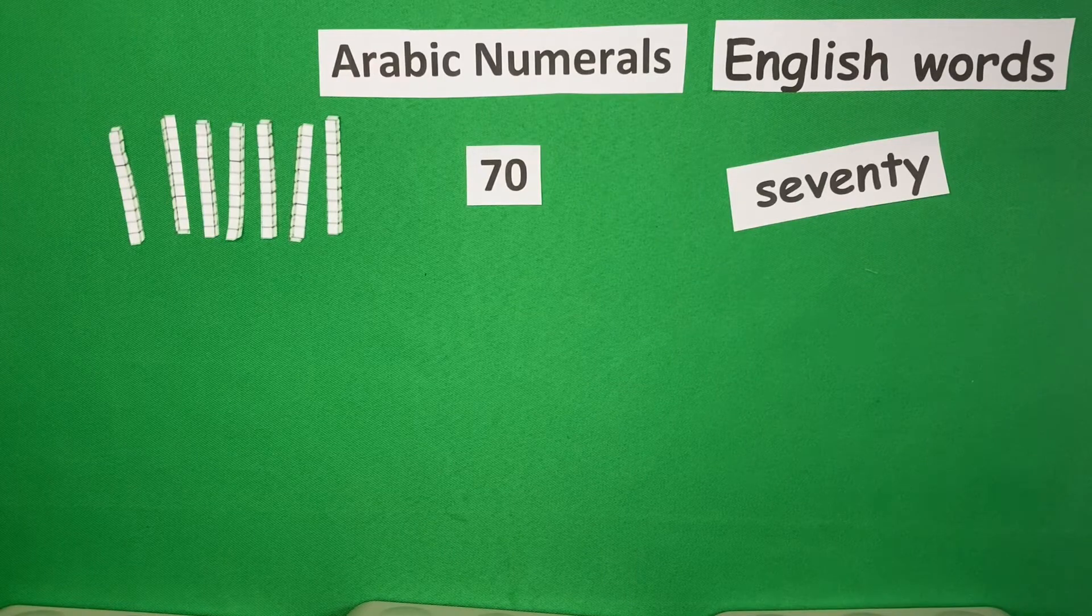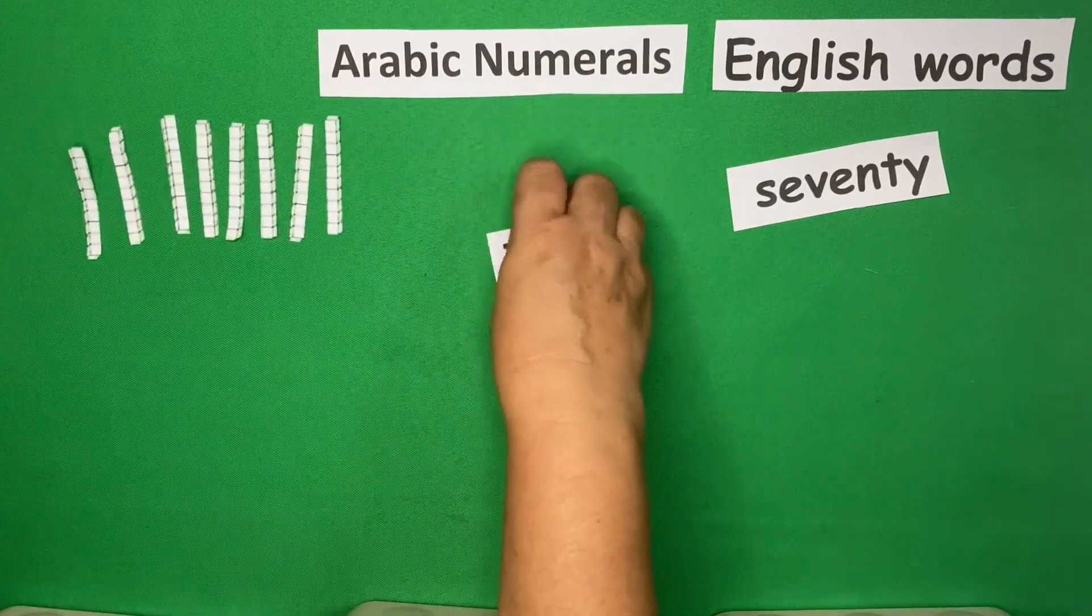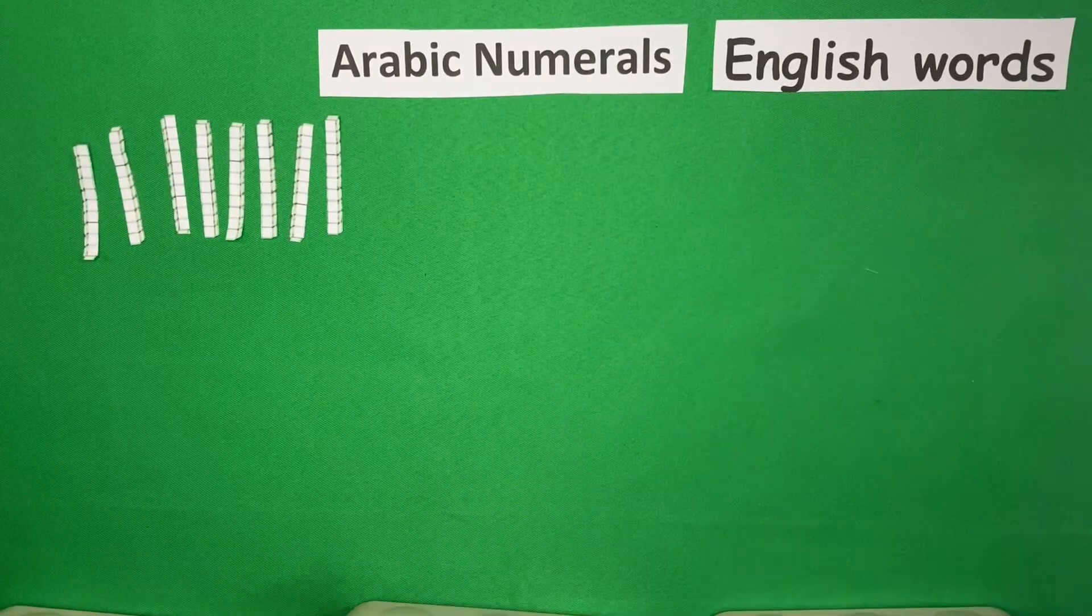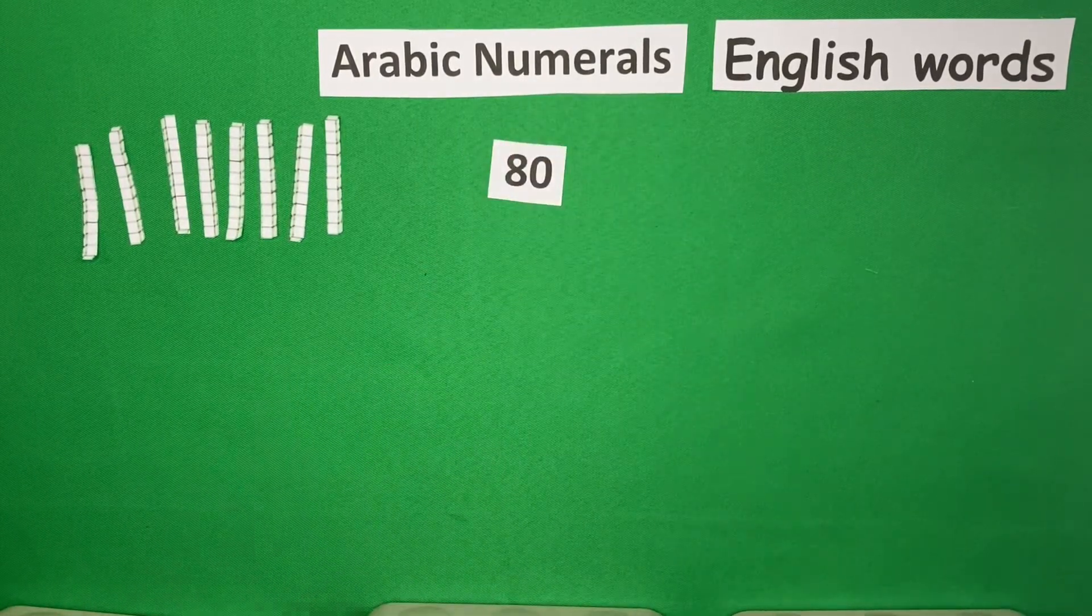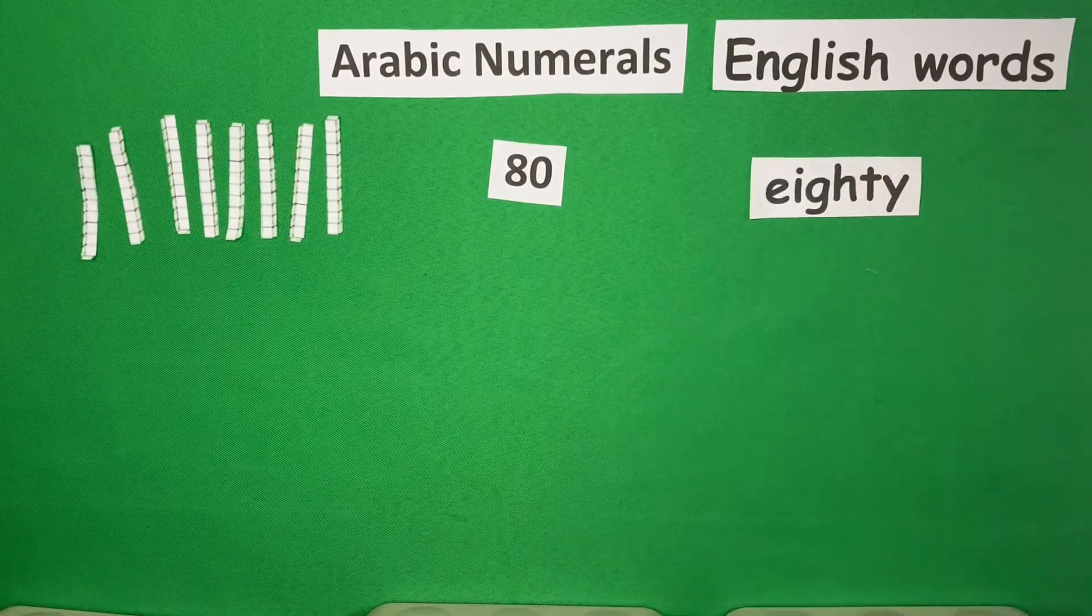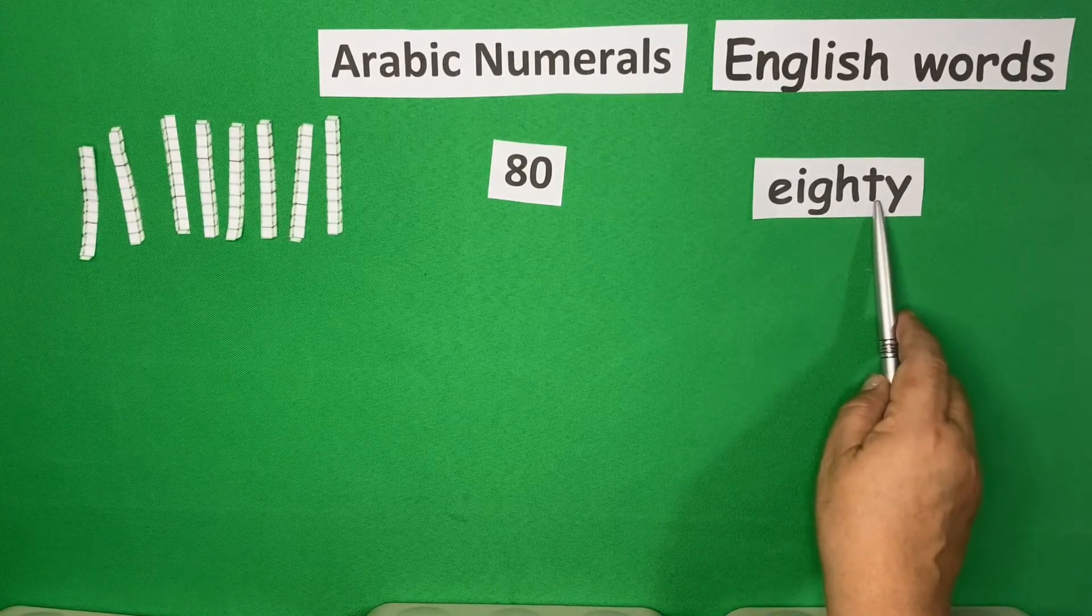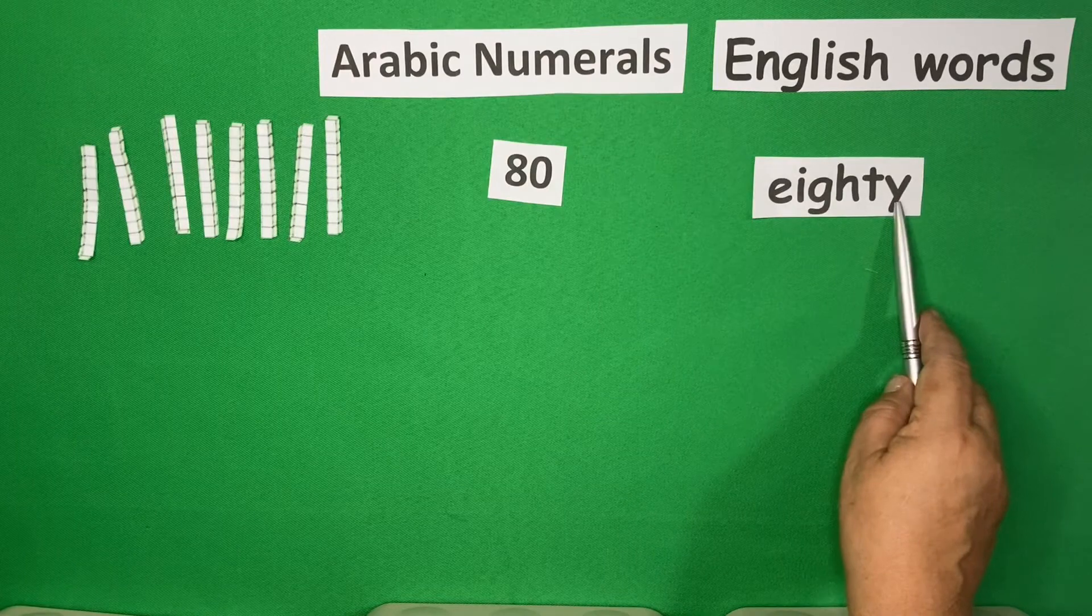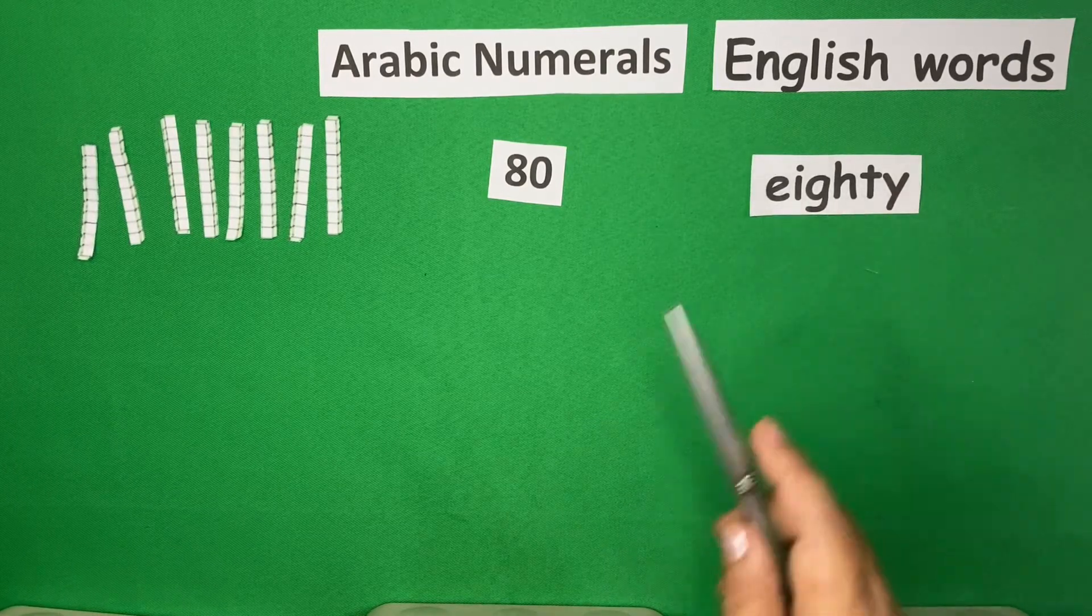Then, next, we add 1 more. And we will have 80. In English, it's E-I-G-H-T-Y, 80, only 1 letter T.